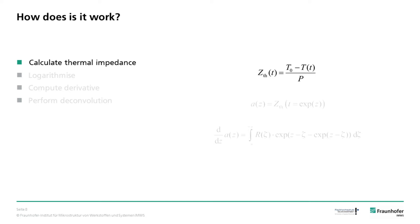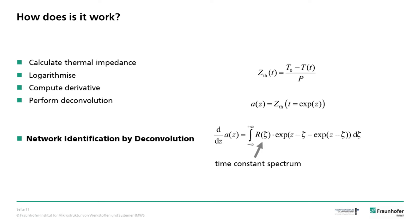As the time scales for the cooling of different parts of the lamps differ by several magnitudes, it is convenient to transform from linear time t to logarithmic time z. In the next step, the derivative of the impedance with respect to z is calculated numerically. If one has a look in the specific literature, one sees that this derivative is the convolution of the time constant spectrum R, which we are looking for, and the function on the right. To calculate the time constant spectrum, we then perform a numerical deconvolution with regard to this function.